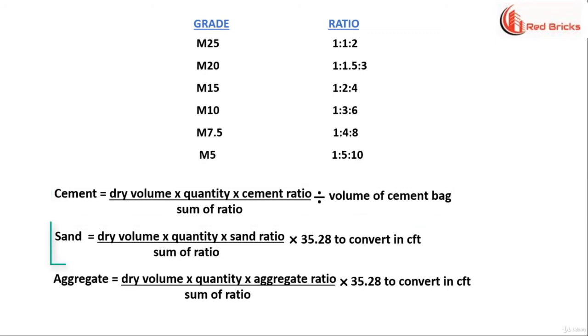The formula for calculating the quantity of sand is dry volume into quantity into sand ratio divided by sum of ratio whole multiplied by 35.28. We multiplied it with 35.28 to convert it to cubic feet.